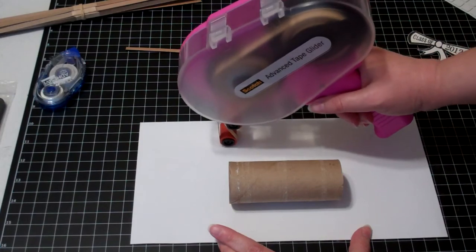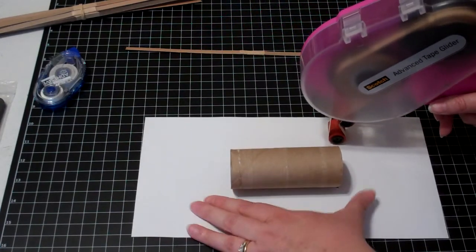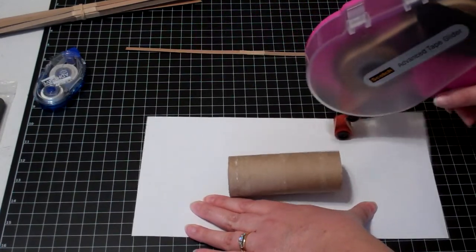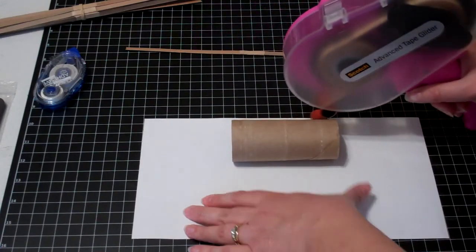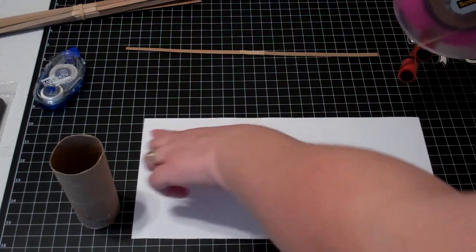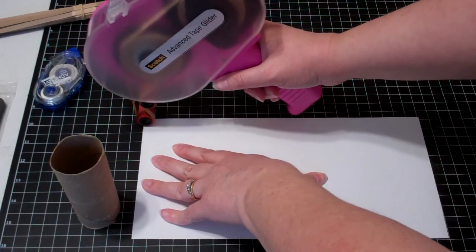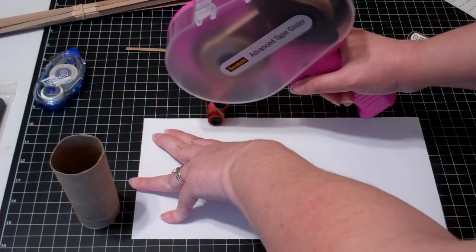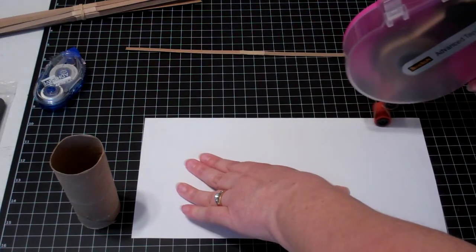I'm going to run it the width of the toilet paper roll. I'm going to do some on this end, and I'm going to do some on this end. And on the end that's going to close, which is going to be this far side, I'm actually going to run adhesive all the way down this end.